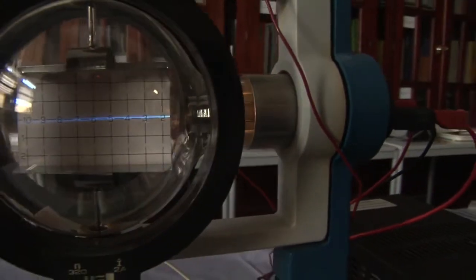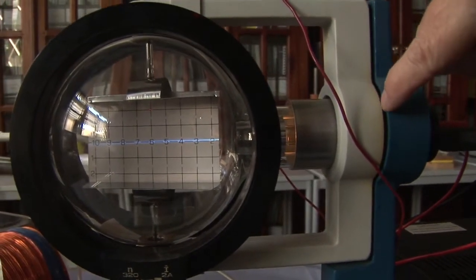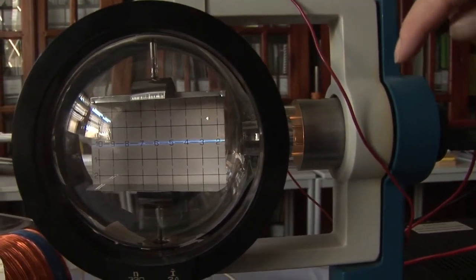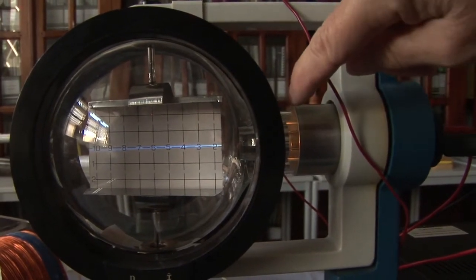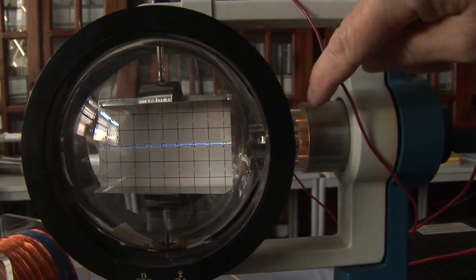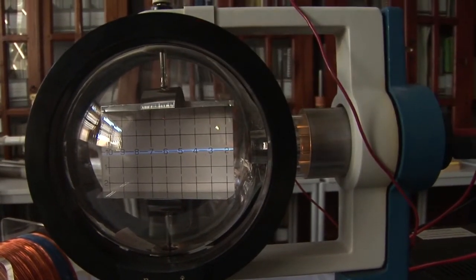So what we've done is we have a hot wire inside where the cathode is that boils electrons off. The electrons are accelerated by the anode at the front, which has got a hole in it, and then they can stream out through the hole across the screen.